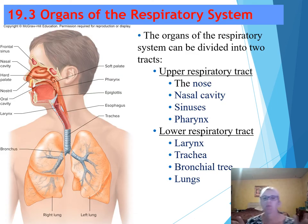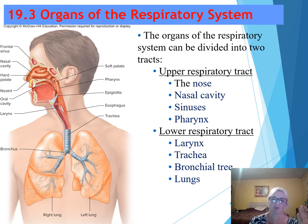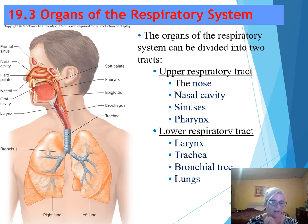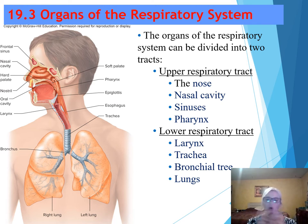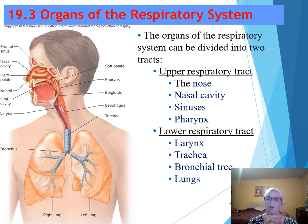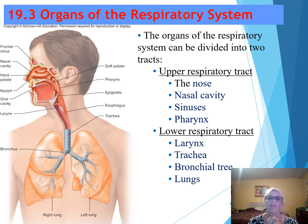The organs of the respiratory system can be divided into two general tracts: the upper respiratory tract and the lower respiratory tract. The upper respiratory tract includes the nose, nasal cavity, sinuses, and pharynx. We also take in air through our mouth. The lower respiratory tract includes the larynx, the trachea, the bronchial tree, and the lungs.